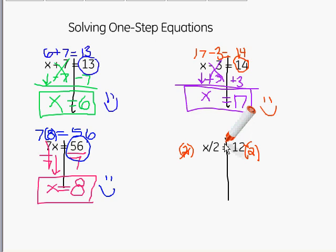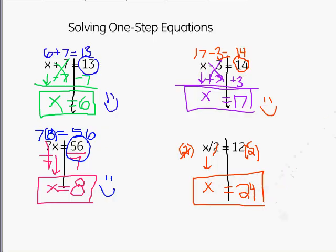Now, 2 divided by 2 again gives me 1. So those cancel each other out. And I'm just left with the x, which is exactly what we want. By doing the inverse, we get just x left here that we drop down. On this side, 12 times 2, 12 times 2 is 24. So x equals 24 is my final answer.